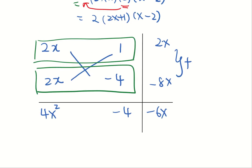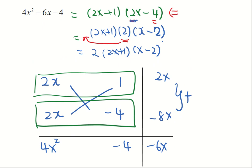That's the last example. The main points for cross method: trial and error with different combinations is necessary; the middle x term is used to check whether your combination is correct; when you cross, you multiply; and read the factors horizontally at the end. That's all for today's lesson. Thank you.